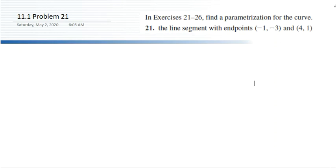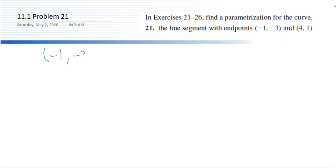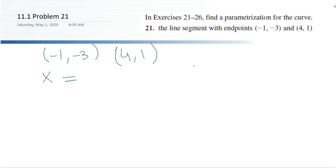We'll do three practice problems to understand parameterization. In the first problem, we have a line parameterization. We are given two points: (-1, -3) and (4, 1). We'll start with a general equation where x equals some expression. At the starting point we should have (-1, -3).